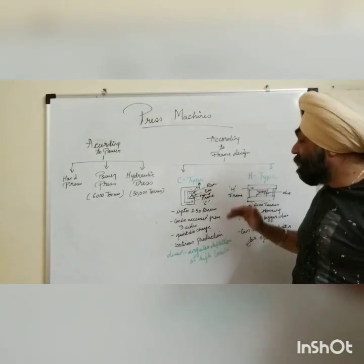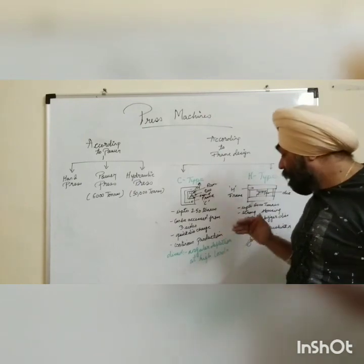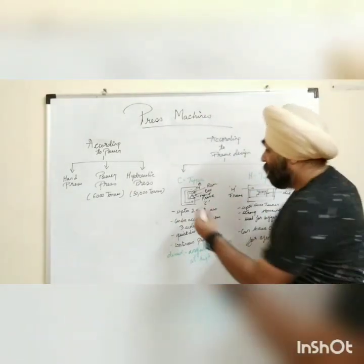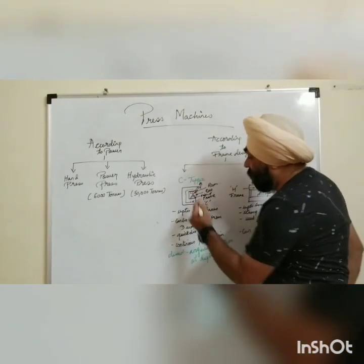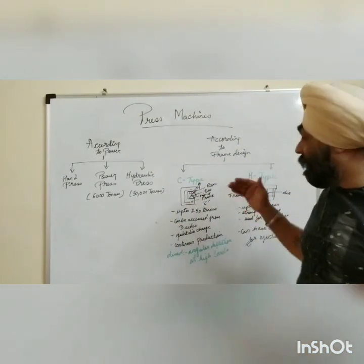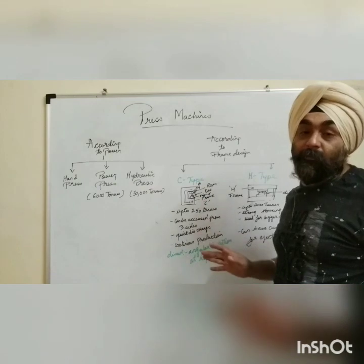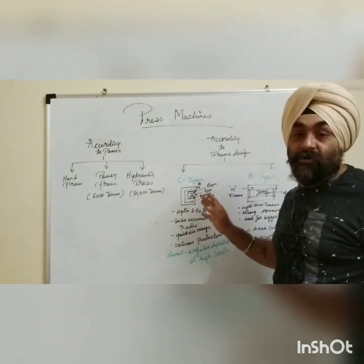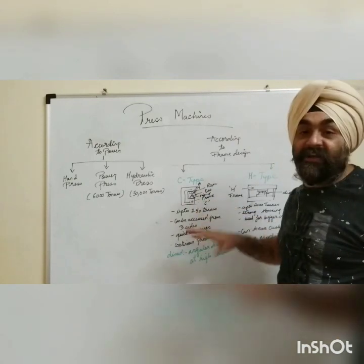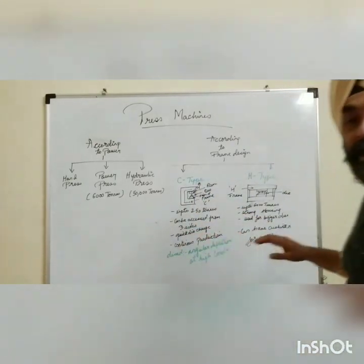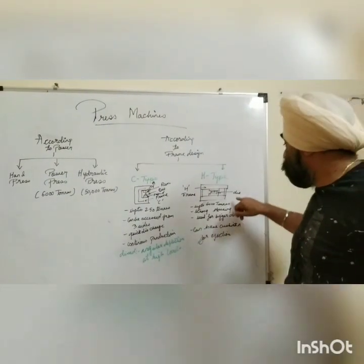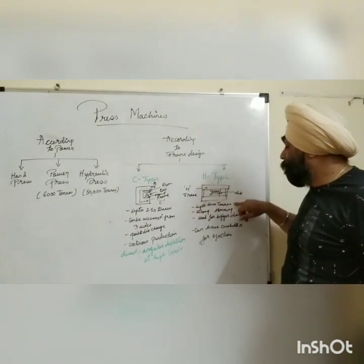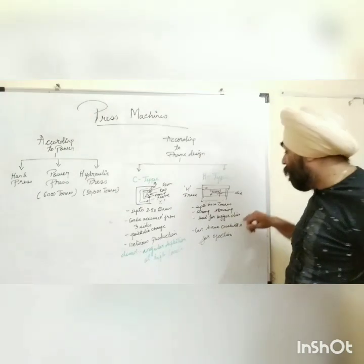The main disadvantage of this type of press is that when there are very high loads, there is an angular deflection — this part can deflect, and because of that you can have a high possibility of breaking the die or punches. So this is not used for very high loads. Then we have the H-type frame, which can be designed up to 60,000 tons according to requirement.